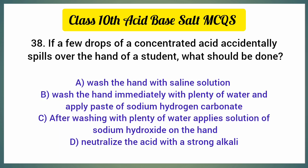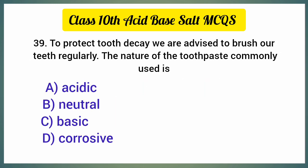If a few drops of concentrated acid accidentally spill over the hand of a student, what should be done? The correct option is option B: wash the hand immediately with plenty of water and apply a paste of sodium hydrogen carbonate.